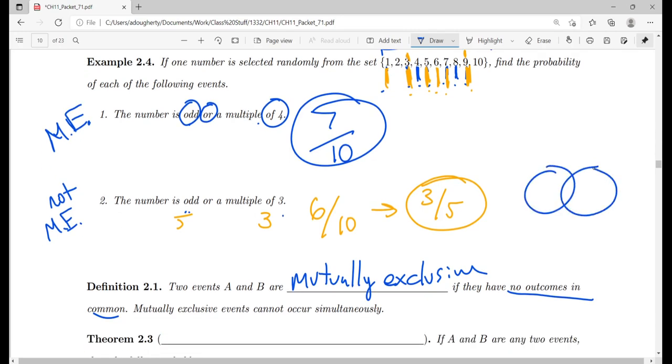Again, if you drew a Venn diagram, multiples of 3 and odd numbers: 1, 3, 5, 6, 7, 9. Again, you've got all sorts of overlap here. You've got stuff that occurs outside of both, but because there's overlap, these are not mutually exclusive.